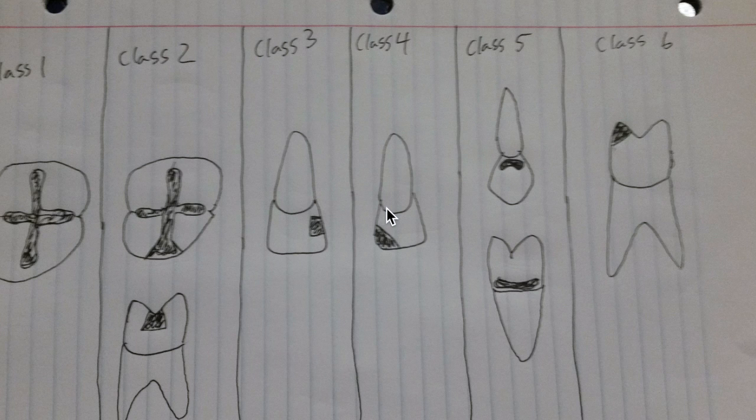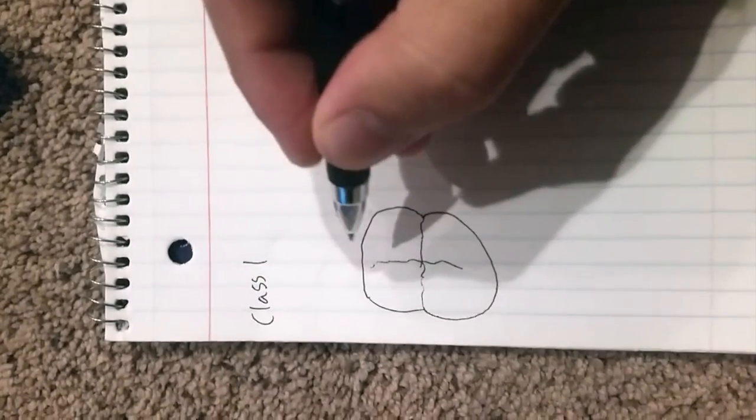So today we're going to talk about GV Black's Caries Classification System. You guys are going to use this a lot, and this is how you describe caries and restorations.